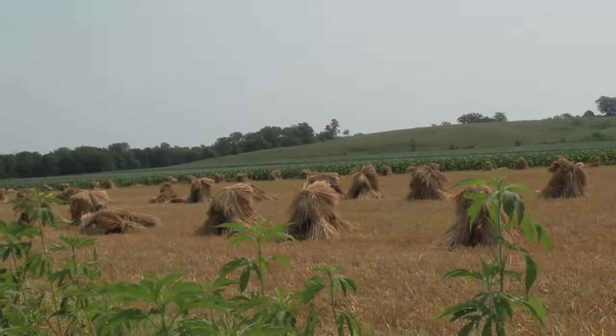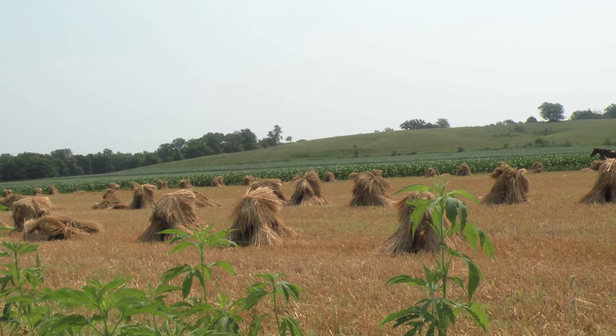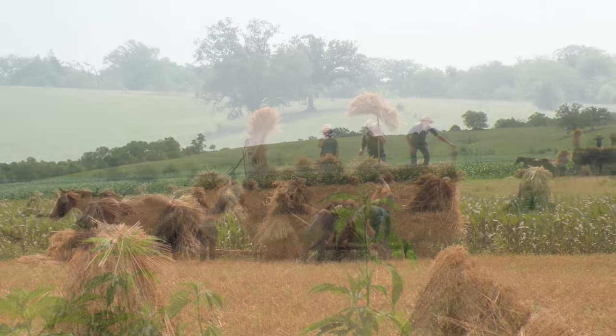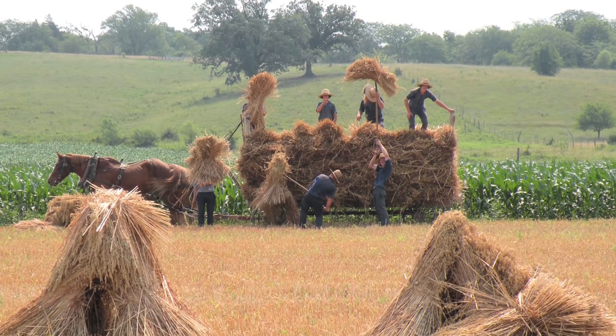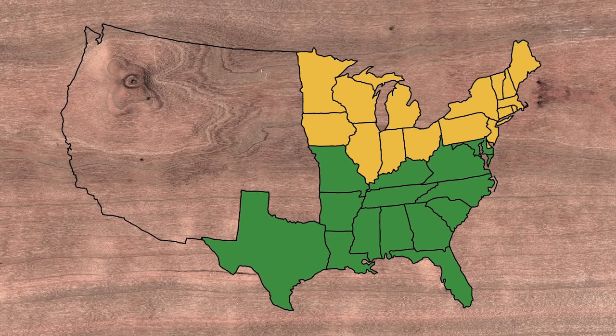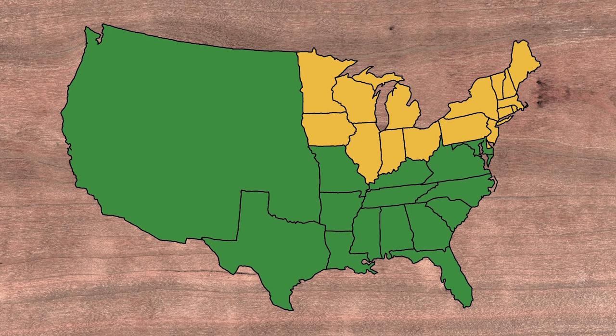In the 1850s, the big question was what to do about all the land in the West when it was settled and carved up into new states. Northerners wanted territories in the West admitted as free states, while Southerners wanted them to become slave states.